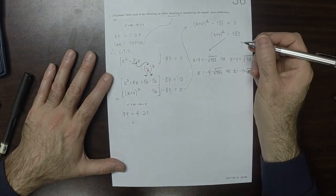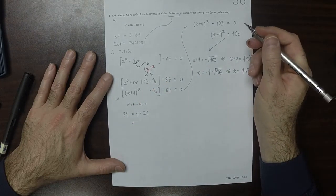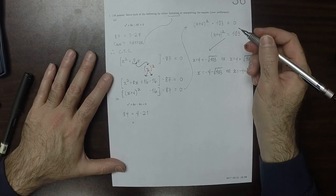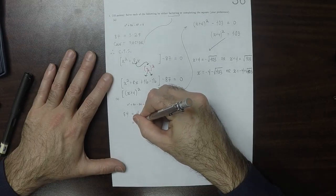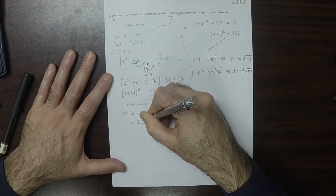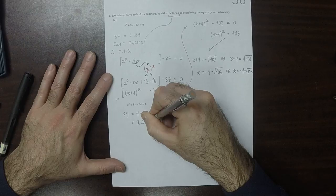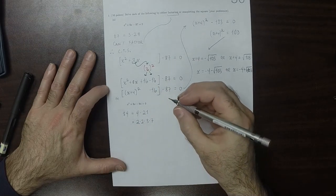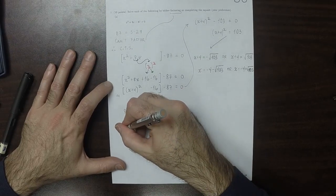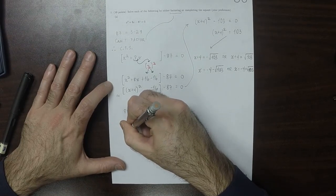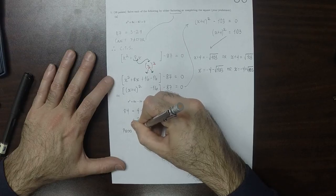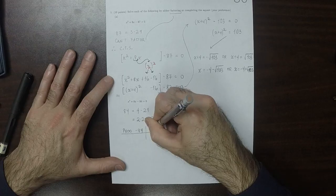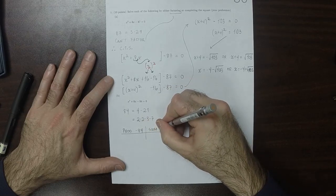So this would be 2, times 2, times 3, times 7. 4 times 21. Okay, so 14 and 6. Which is to say, that we want the product to be negative 84, and we want the sum to be positive 8.